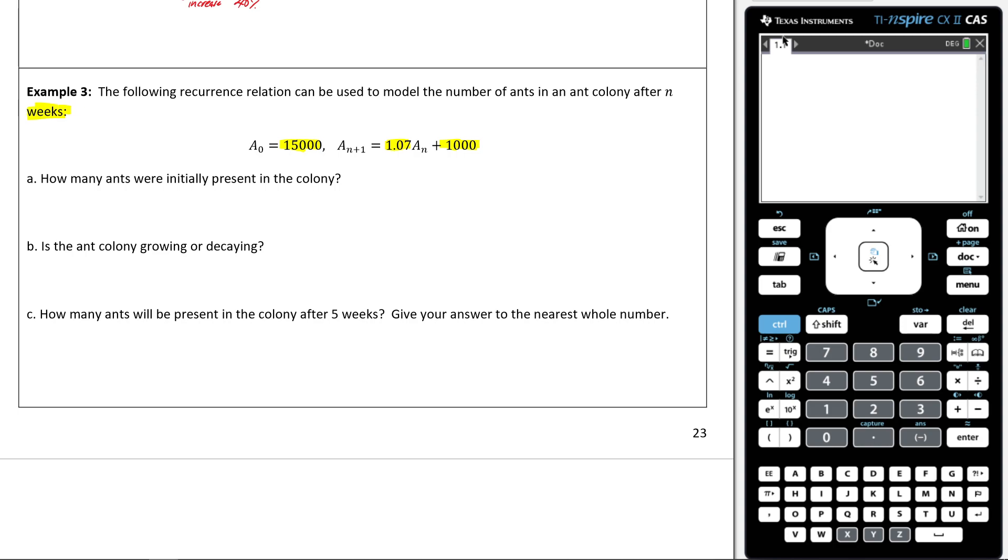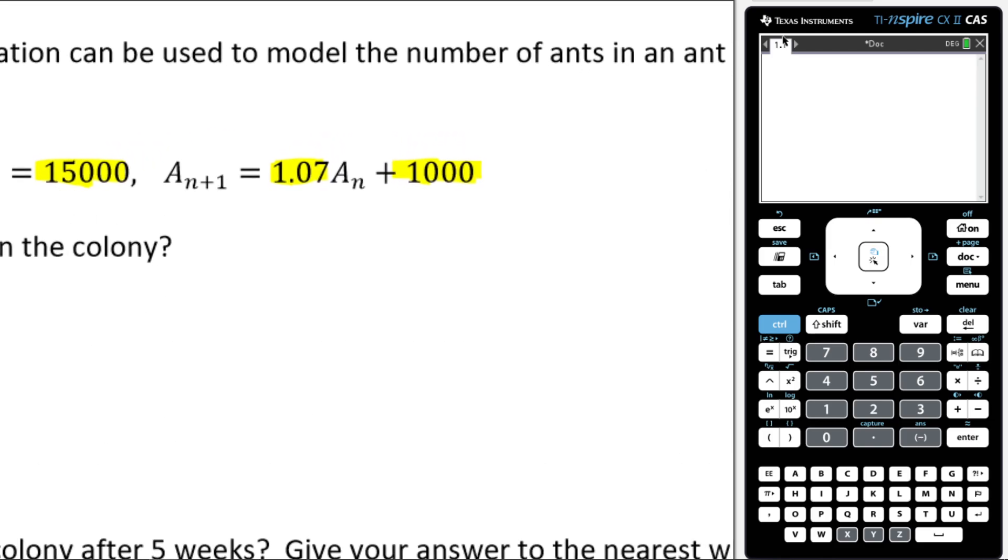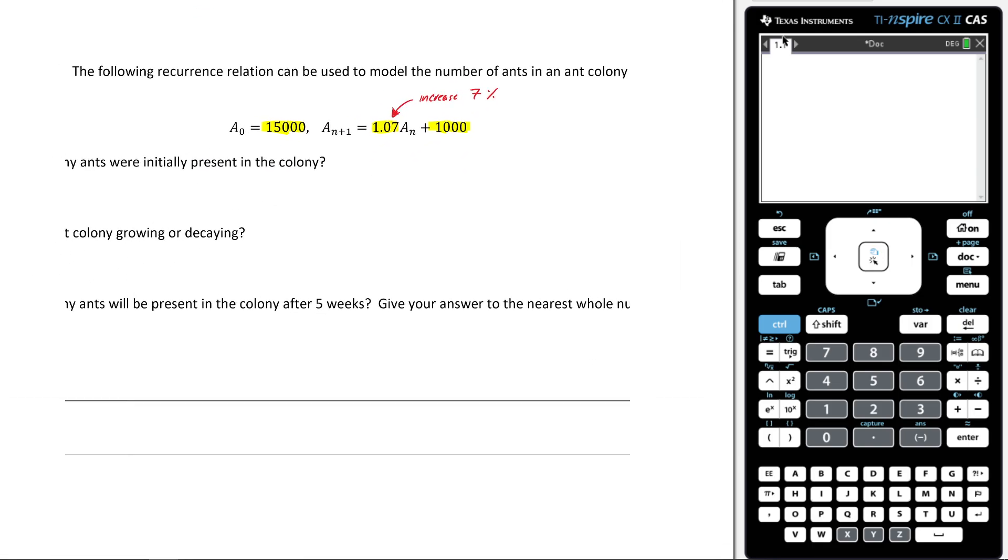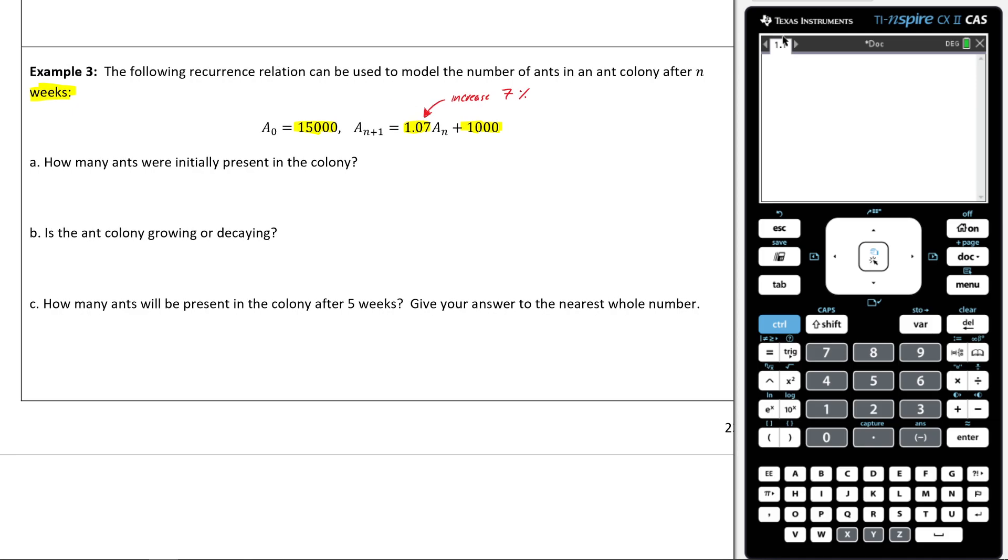Again, it's really super duper important that you can look at this and just immediately tell me that this is an increase of 7%. Make sure you can do that. If you cannot look at that and recognize that it's an increase of 7%, you need to come speak to me so we can go through it again and again because that's really important.